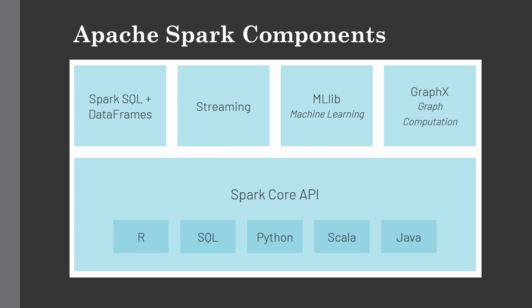The next component is Spark Streaming, which enables interactive and powerful data analysis for streaming data. Streaming data is data with high velocity that is live in nature — such as Twitter feeds, Instagram, and Facebook data, as well as sensor data from smartphones, cars, or temperature sensors. These sensors and applications generate data in huge volumes, and if you need to process it in real time, Apache Spark Streaming gives you that capability.